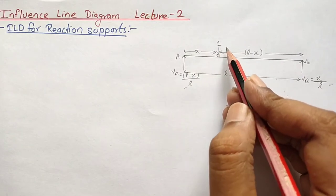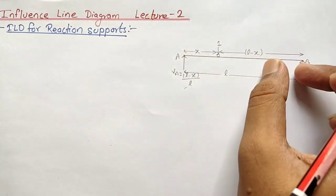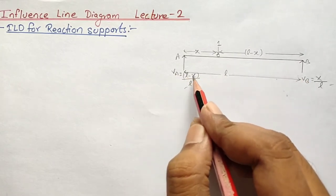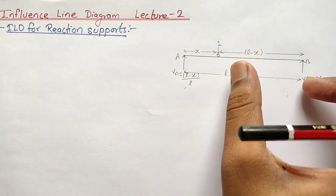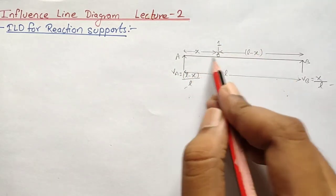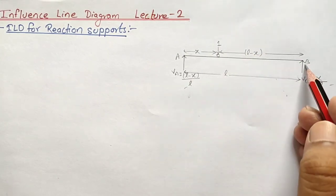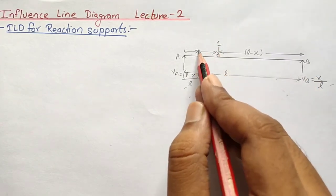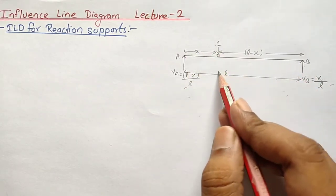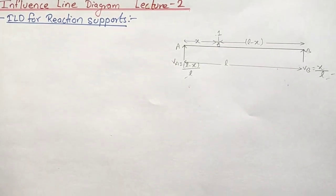Whenever a simply supported beam carries a load W at some distance from the left support, the reaction at the support is given by load multiplied by the distance on the opposite side divided by the whole span. So VA equals 1 times (L minus x) divided by L, and VB equals 1 times x divided by L, which simplifies to x upon L. Now we need to draw the influence line diagram for these reactions.